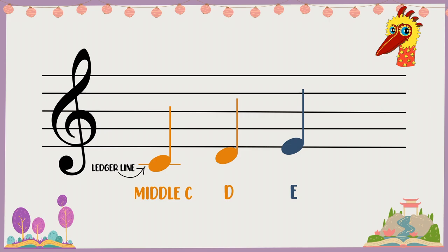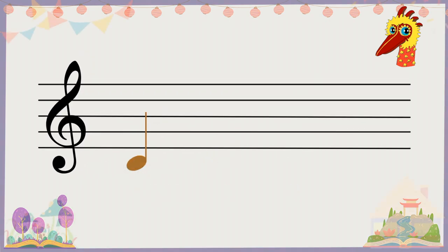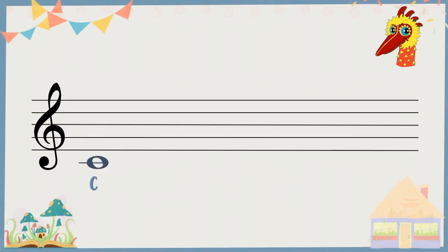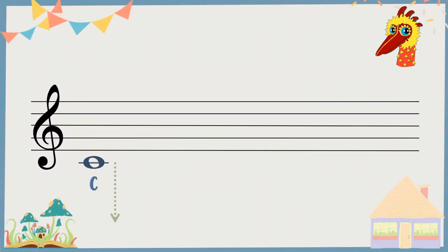Not just yet. You can have a lot of ledger spaces and lines. Check this out. Here's middle C. One ledger space lower, you have B.